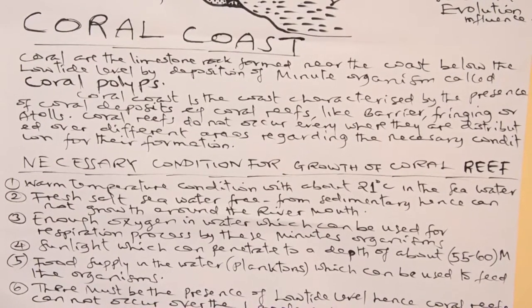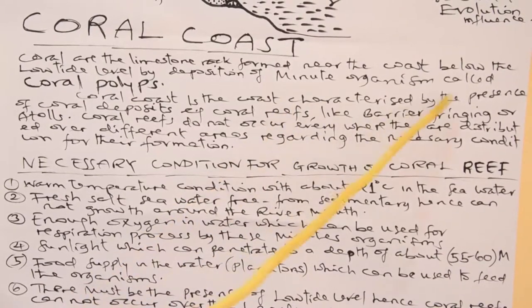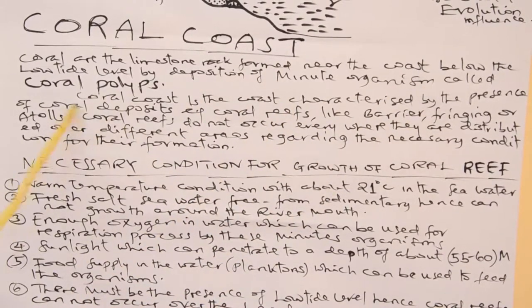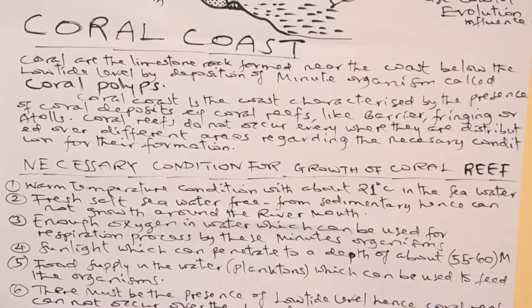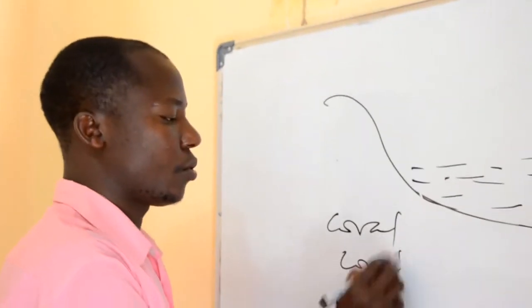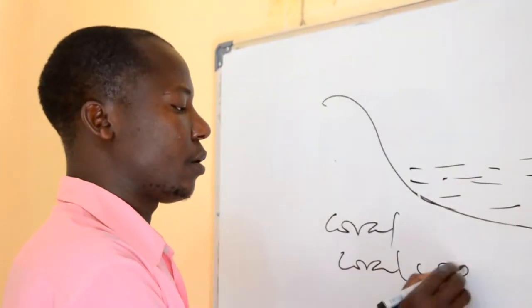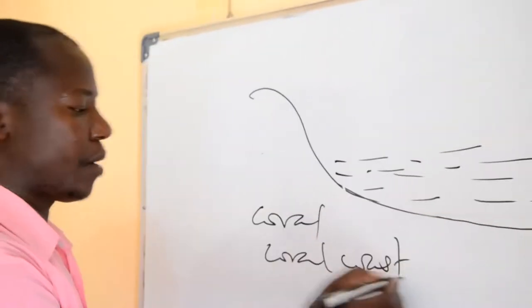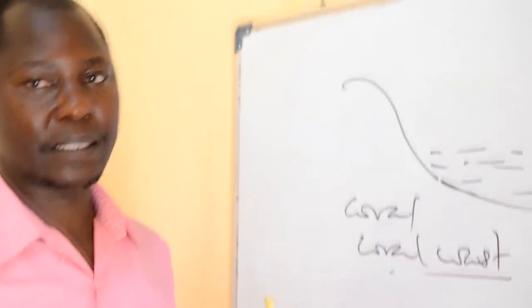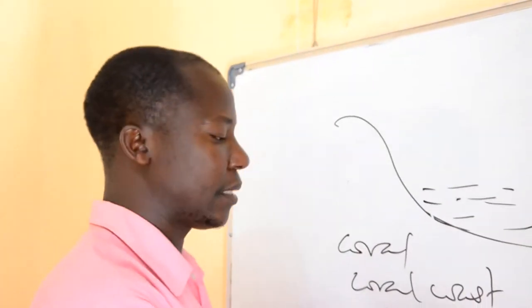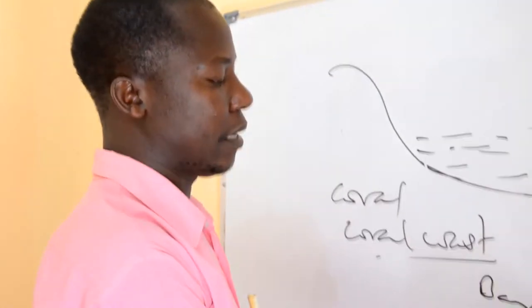Therefore, coral coast is a coast characterized by the presence of coral deposits. Dear students, you have to differentiate the meaning of coral and coral coast. Coral coast is a coast characterized by the presence of coral deposits. Examples include coral reefs like barrier reefs, fringing reefs, and atolls.